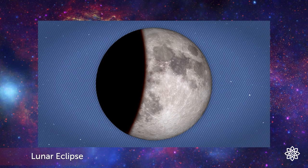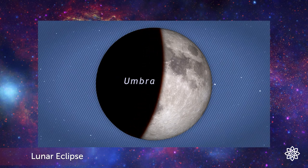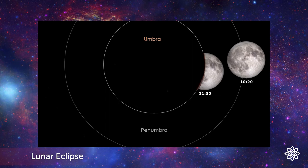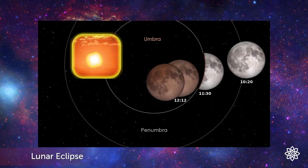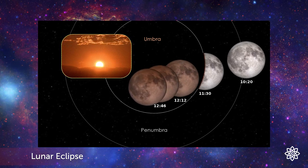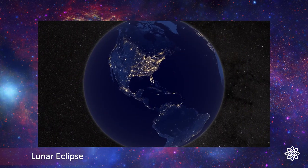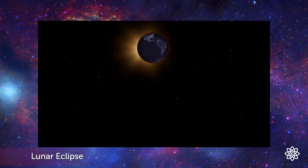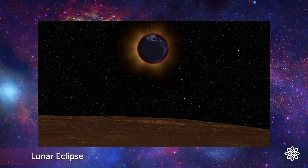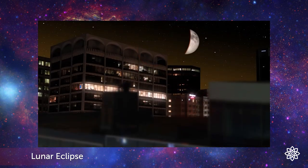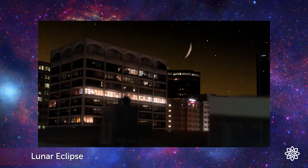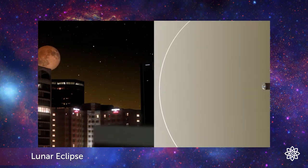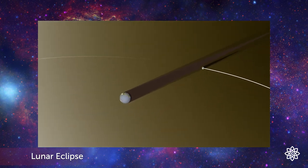As the moon passes into the central part of the Earth's shadow, called the umbra, it darkens dramatically. Once entirely within the umbra, the moon appears a dim red due to sunlight scattered through the Earth's atmosphere. In fact, if you watched the eclipse from the surface of the moon, you'd see the Sun set behind the entire Earth, bathing you in a warm red glow. Back home, you'll have to stay up late to watch a lunar eclipse, but you'll see the moon in rare form and catch a brief glimpse of our own planet's long shadow.